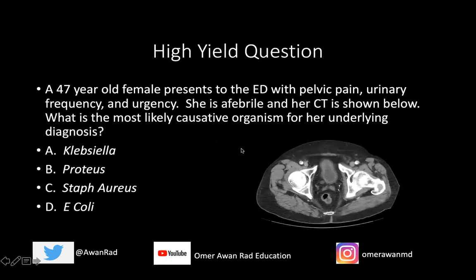Let's start with this high yield question. A 47-year-old female presents to the ED with pelvic pain, urinary frequency and urgency. She is afebrile and her CT scan is shown below. What's the most likely causative organism for her underlying diagnosis? Is it Klebsiella, Proteus, Staph aureus, or E. coli? It's based on this CT image through the pelvis that we're seeing. I promise we'll come back to this high yield question at the end, after this very short brief tutorial.